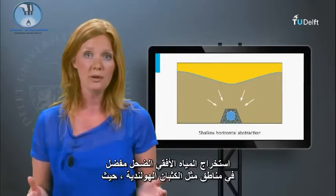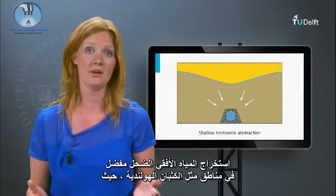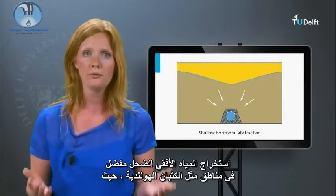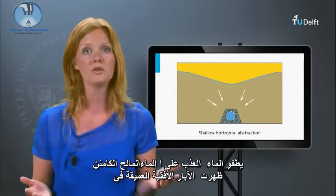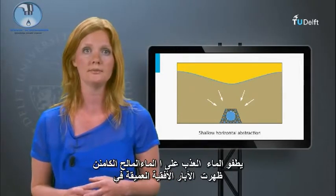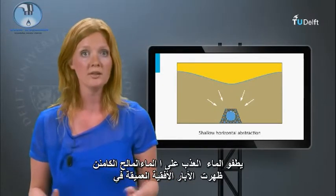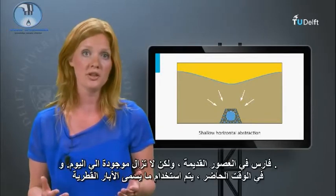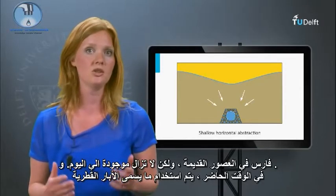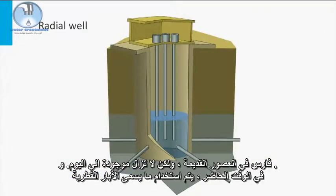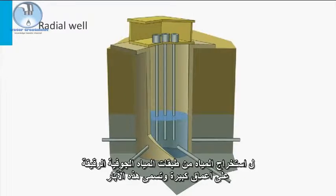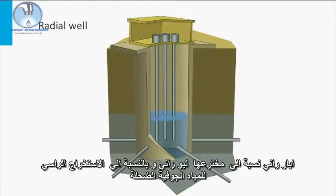Shallow horizontal abstraction is very attractive in areas like the Dutch Dunes, where fresh water floats on top of the underlying salt water. Deep horizontal wells were found in Persia in ancient times but still exist today. Nowadays, so-called radial wells are used for the abstraction of water from thin aquifers at greater depths. These wells are called Ranney wells, after their inventor Leo Ranney.